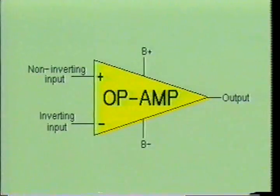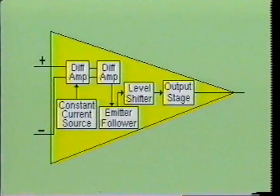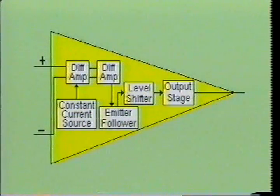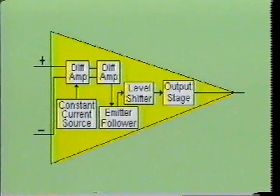The operational amplifier has five terminals: two are used by the power source, two are used for input signals, and one terminal is used as the output. Internally, the op-amp is a complex maze of transistors, diodes, and resistors. It is not necessary to know anything about the internal operation of the op-amp in order to use it, but there is much to learn about how to connect the external components to the op-amp, since these determine what the circuit will do.